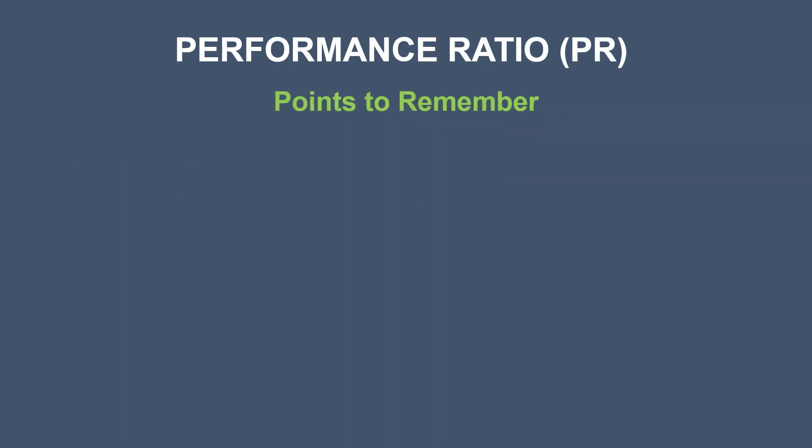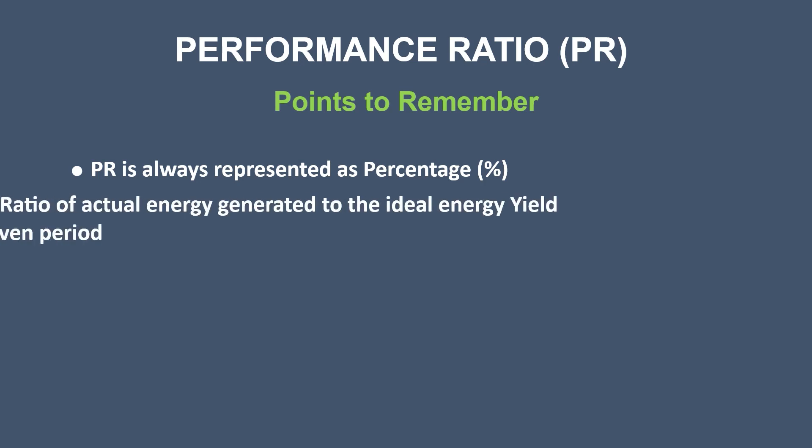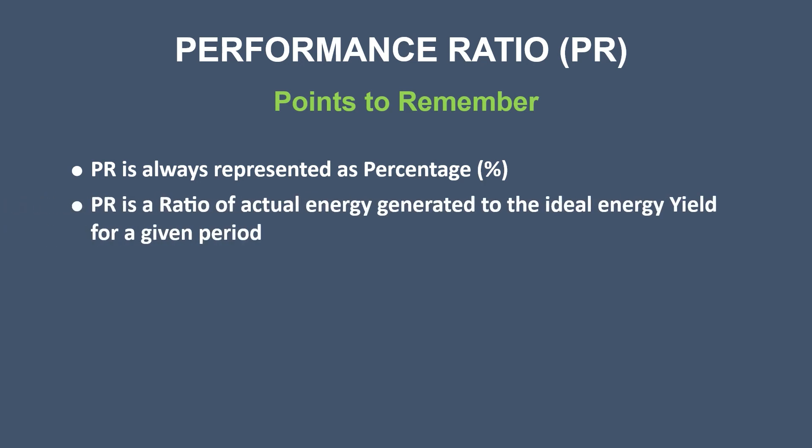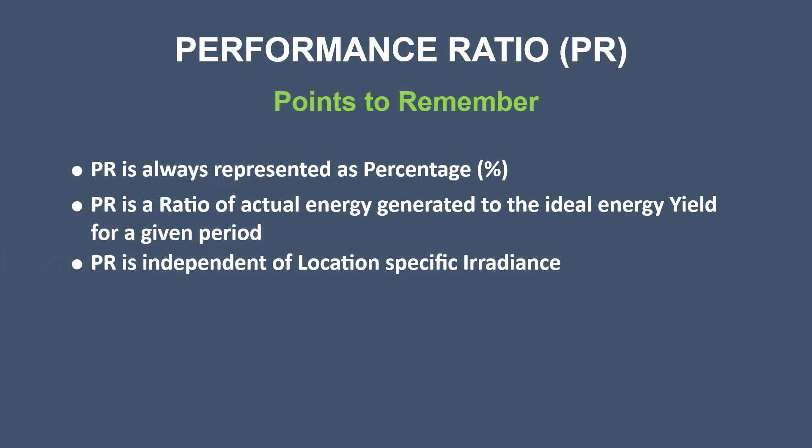Now let's talk about a few points you should keep in mind while assessing the solar plant performance ratio. First, PR is always represented as a percentage. Second, PR is a ratio of actual energy generated to the ideal energy yield for a given period. Third, it is independent of the location's specific irradiance level.